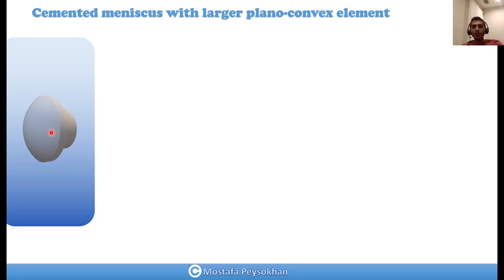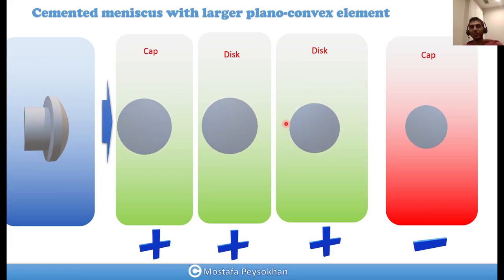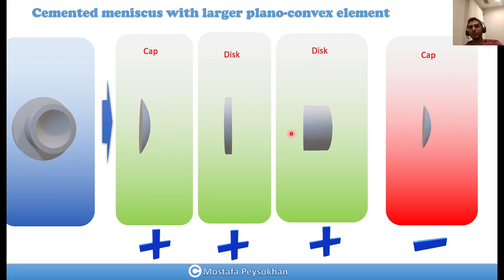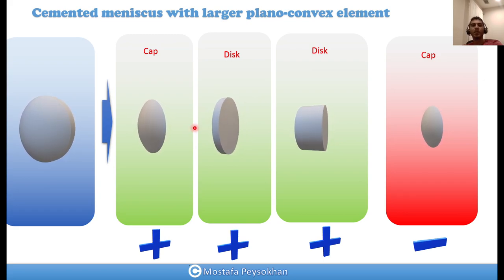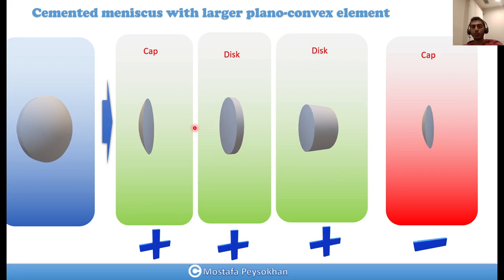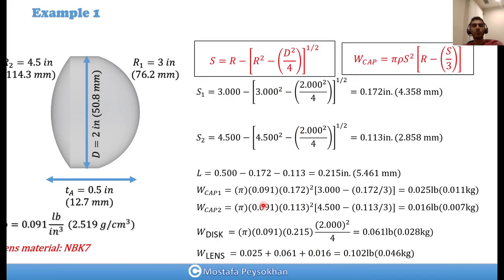For a cemented meniscus, we have a cap on one side, a disc, then a smaller disc in the middle, and another cap with a negative sign because we remove material from that side. By adding these three elements minus the cap, we can calculate the weight of a cemented meniscus. To review: for a cap, we first calculate sagittal depth using its equation, then compute the cap weight. For a conical section, we use the cone weight equation. For a disc, we use the simple disc weight equation.